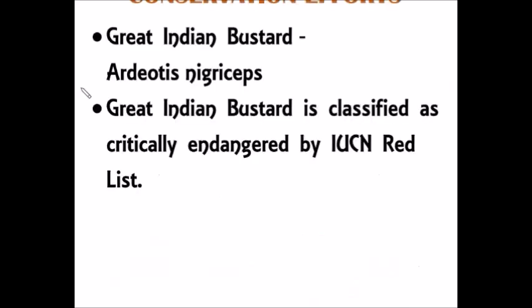The scientific name of the Great Indian Bustard is Ardeotis nigriceps. No need to memorize this fact — it is for informative purpose only.